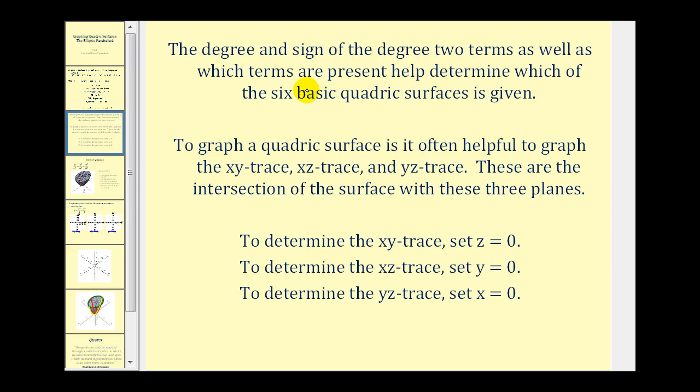As mentioned in the previous videos, the degree and the sign of the degree two terms, as well as which terms are present, help determine which of the six basic quadric surfaces is given.